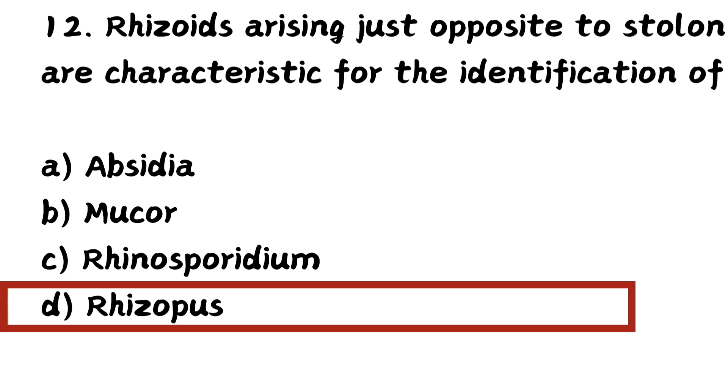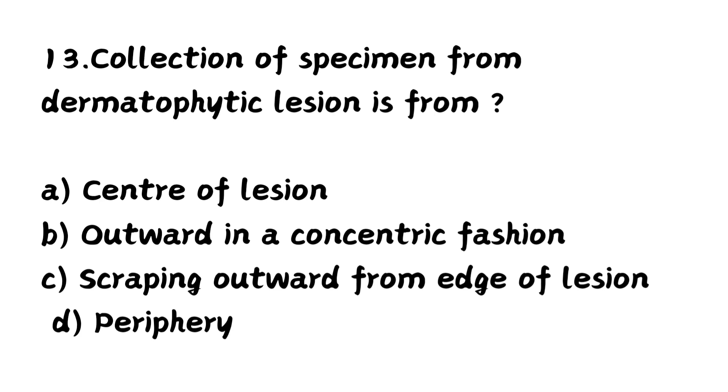Question number twelve: Rhizoids arising just opposite to stolons is a characteristic feature for the identification of Rhizopus.